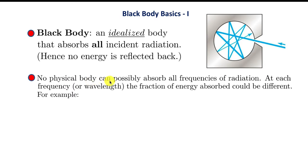Of course, no physical body can ever be a perfect blackbody — it cannot possibly absorb all frequencies of radiation. Light ranges from deep infrared to ultraviolet and beyond, so you would expect that at each frequency or wavelength the fraction of energy absorbed could be different.